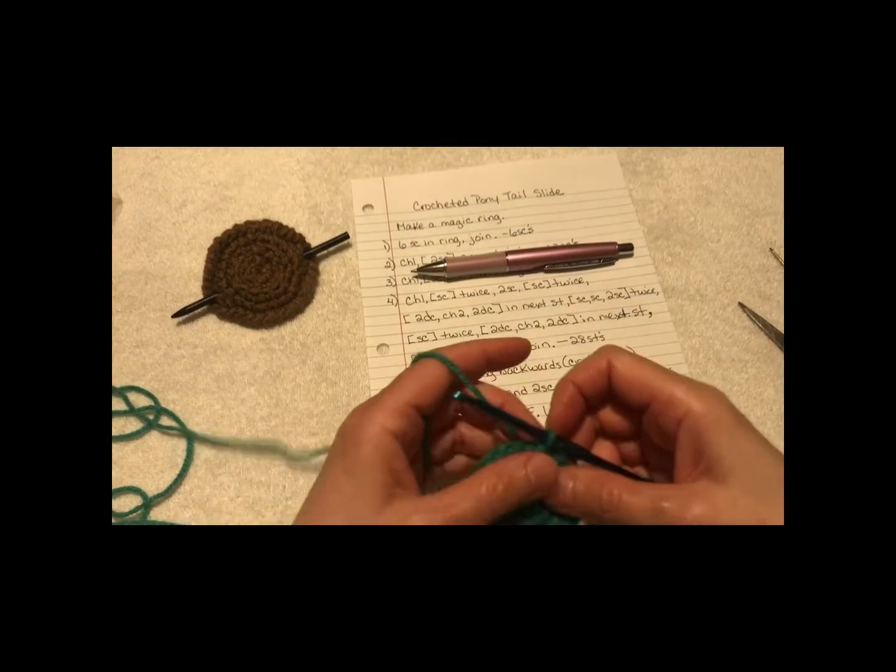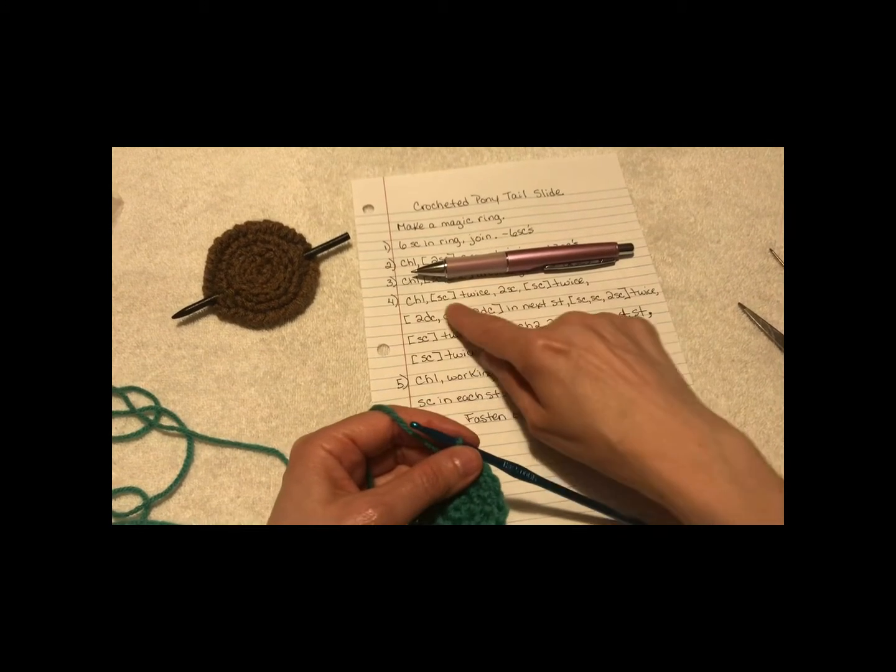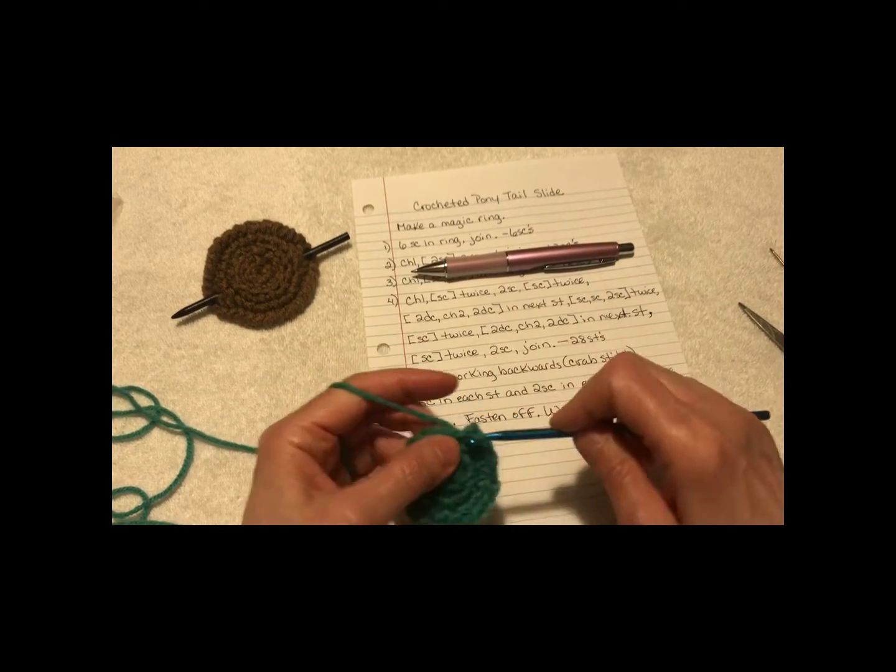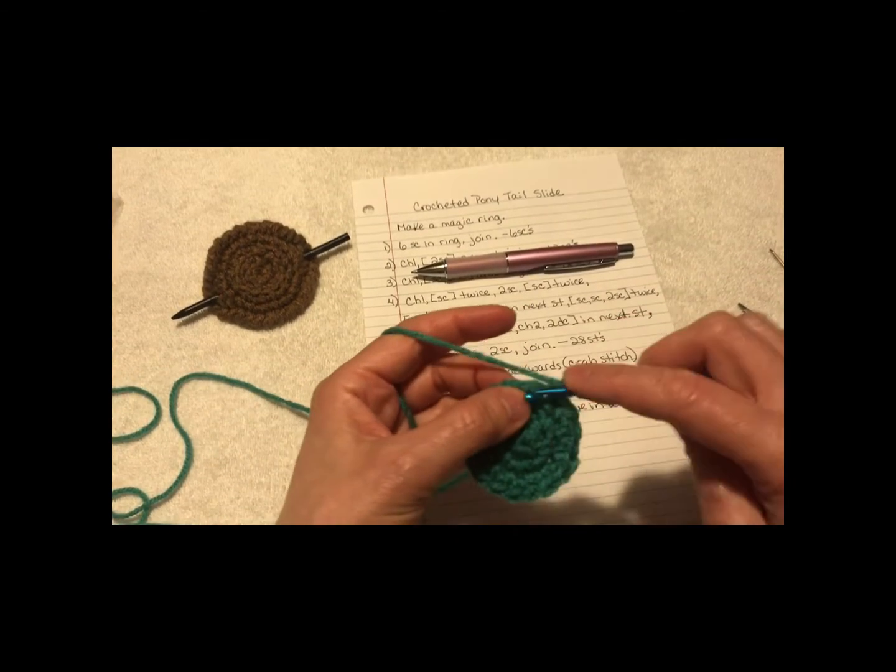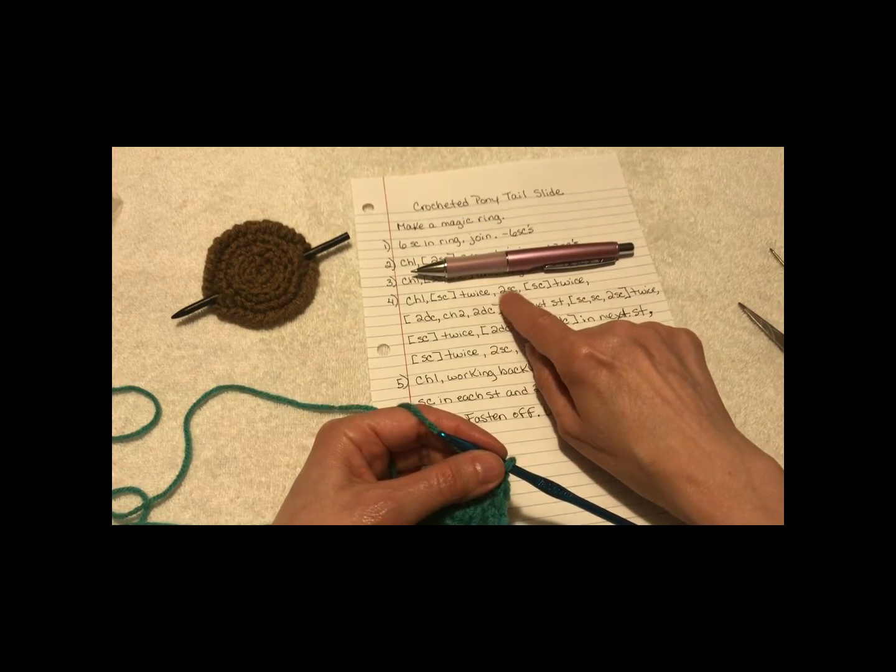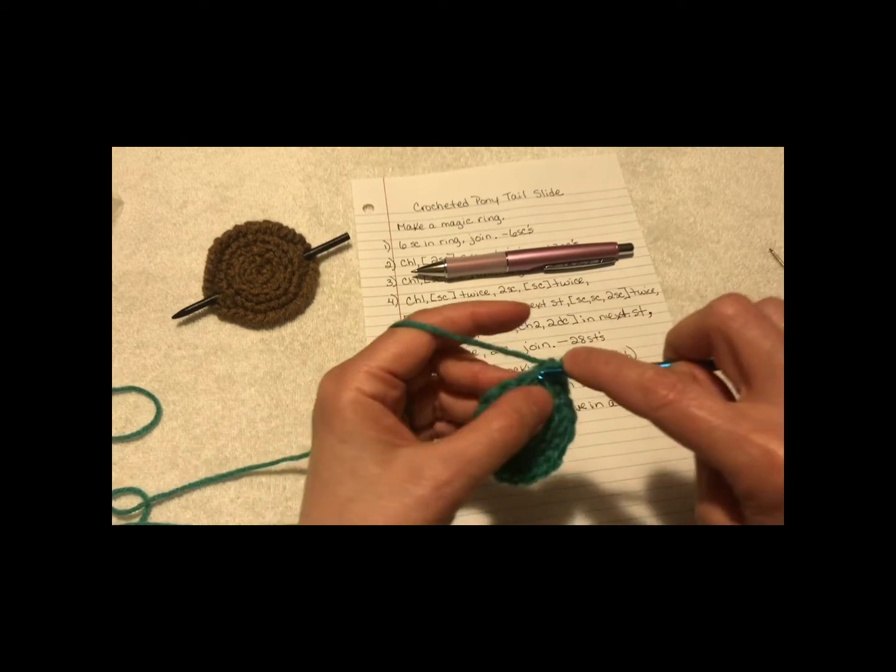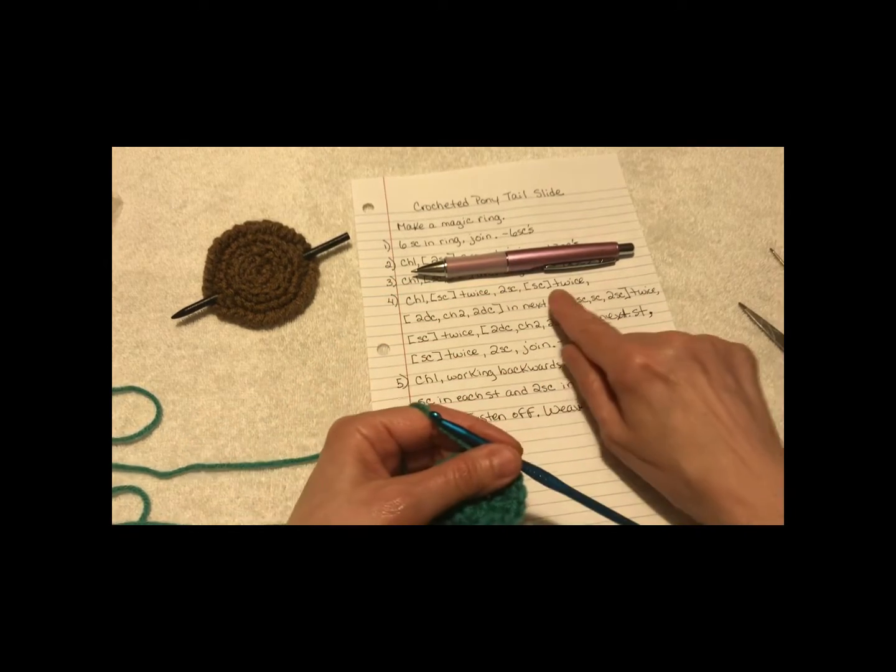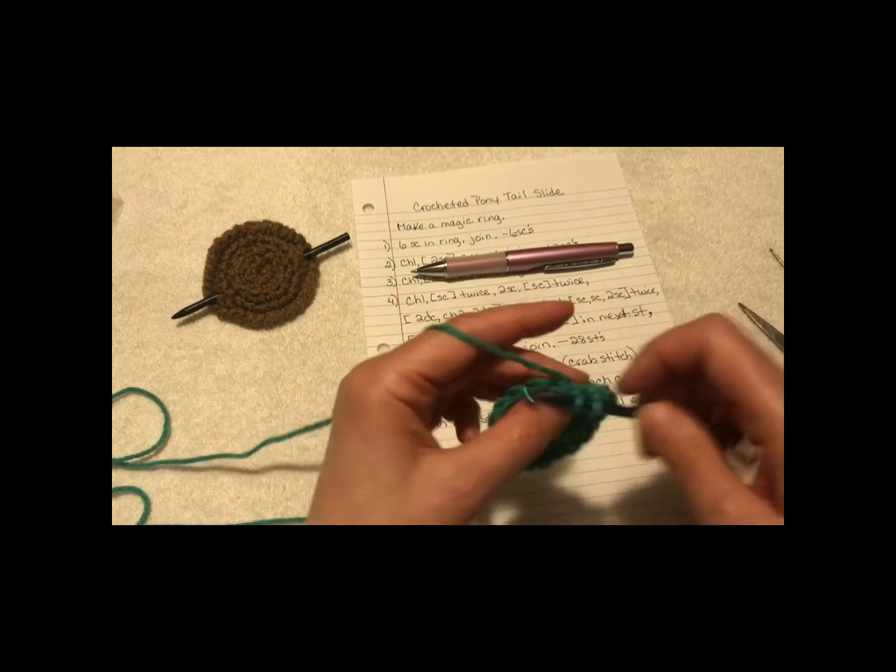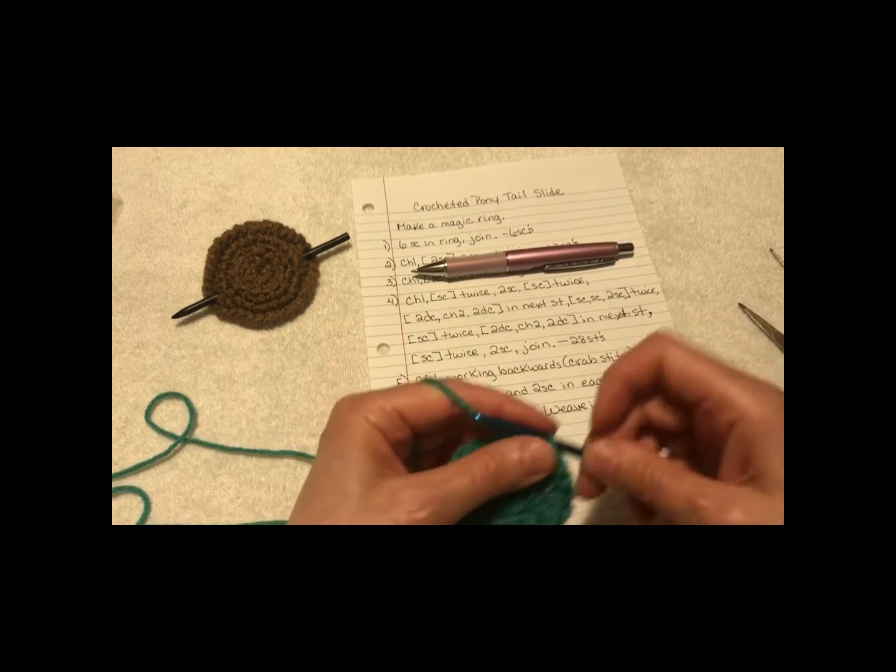Round 4. Chain 1. You're going to single crochet twice. So, here's the first one. And then in the next stitch, do another one. 2 single crochets. That's in the same stitch. 1, 2. Single crochet twice. So, that isn't in the same stitch. So, there's 1 in that stitch. And then the next one is another single crochet.